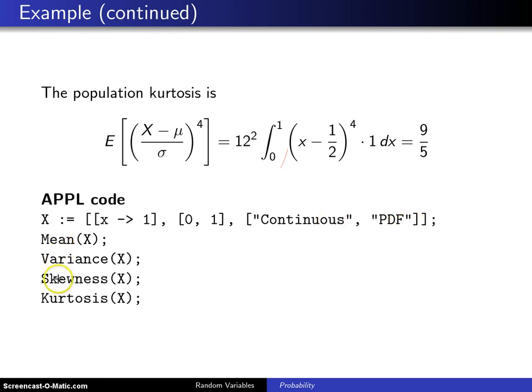If then you call the mean, variance, skewness, and kurtosis functions, they will return 1/2, 1/12, 0, and 9/5 as the mean, variance, skewness, and kurtosis.